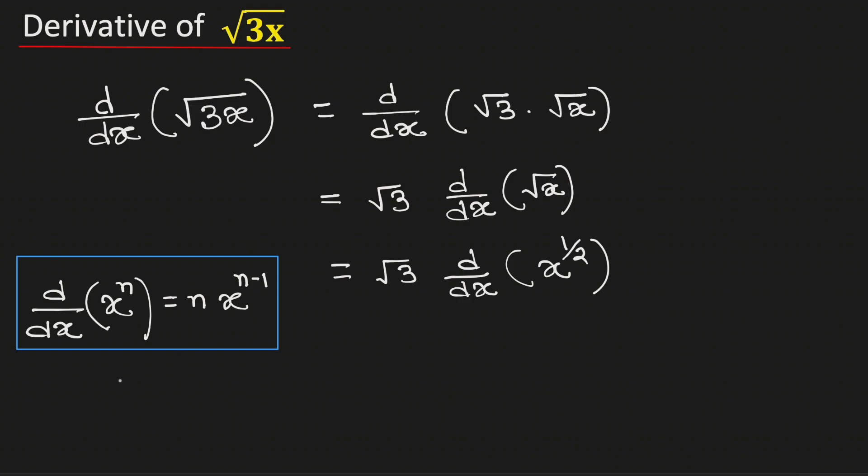So let us use this rule with n is equal to one half. This can be written as square root of 3 times one half times x to the power one half minus one.